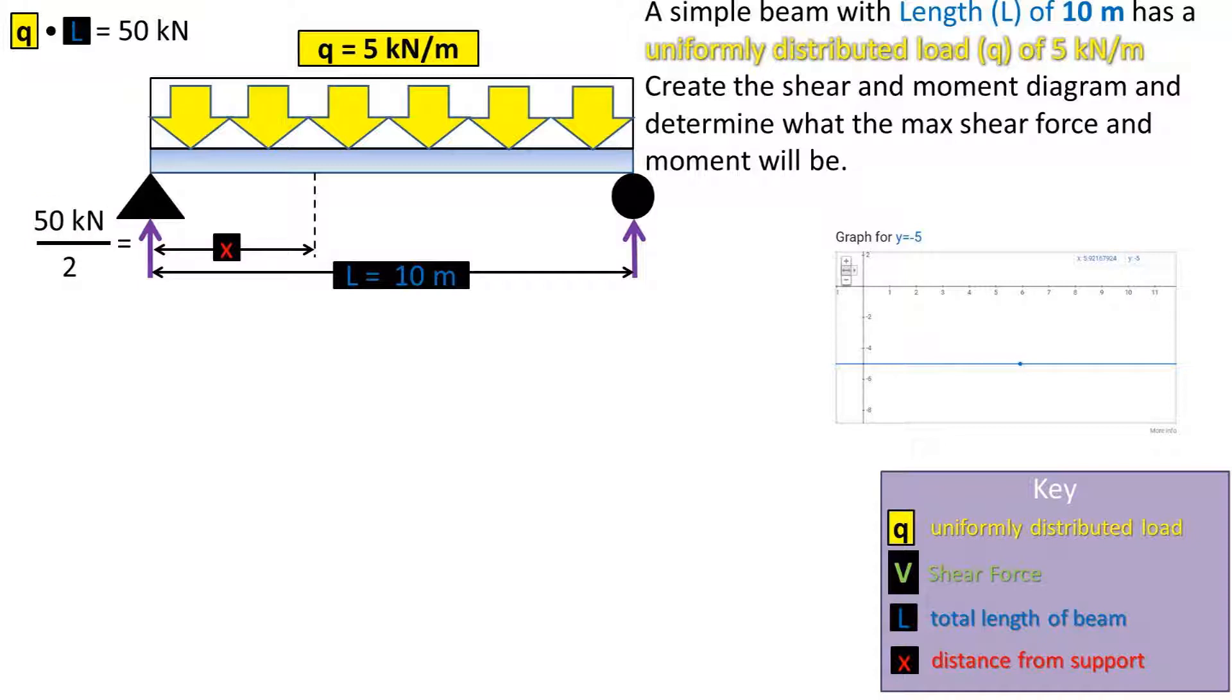This is all represented by Q times L over 2. So we can take the total load, which is 50 kilonewtons, and divide by 2 to get 25 kilonewtons for each of the support's loads.